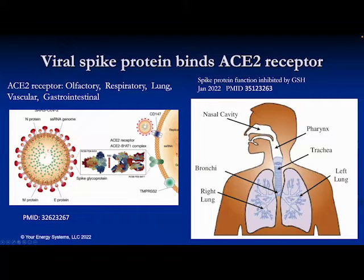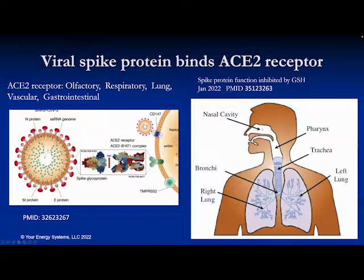Here's a picture we're all familiar with — the COVID virus, SARS-CoV-2 with a spike protein. Here's a blowup showing the spike protein and the recombinant domain where it attaches to the ACE2 receptor on the human cell. These ACE2 receptor cells are found in the nasopharynx, pharynx, and in the lungs.